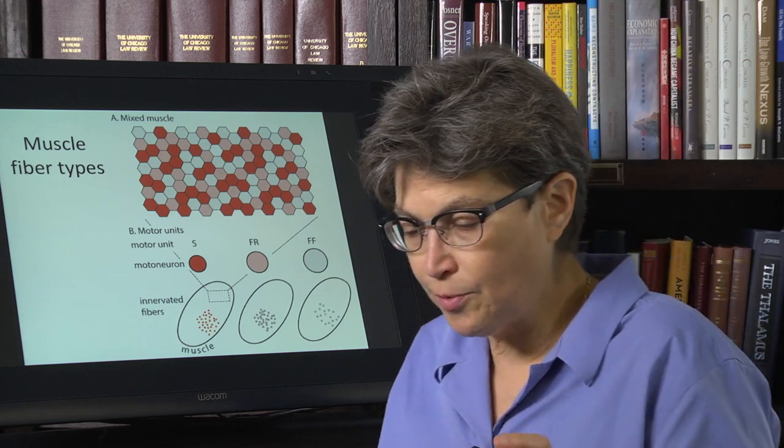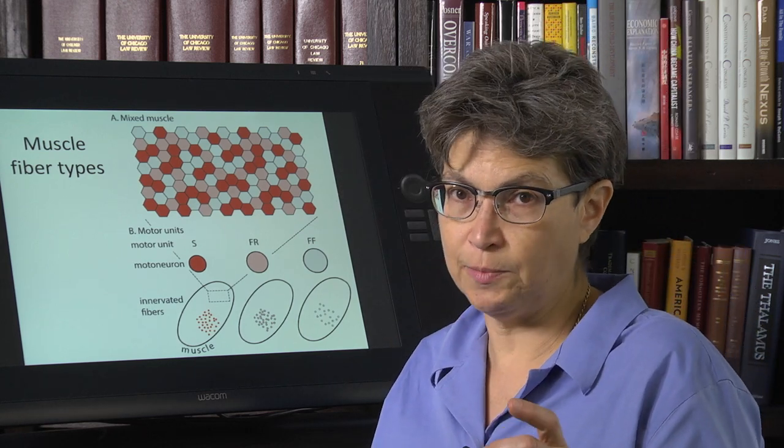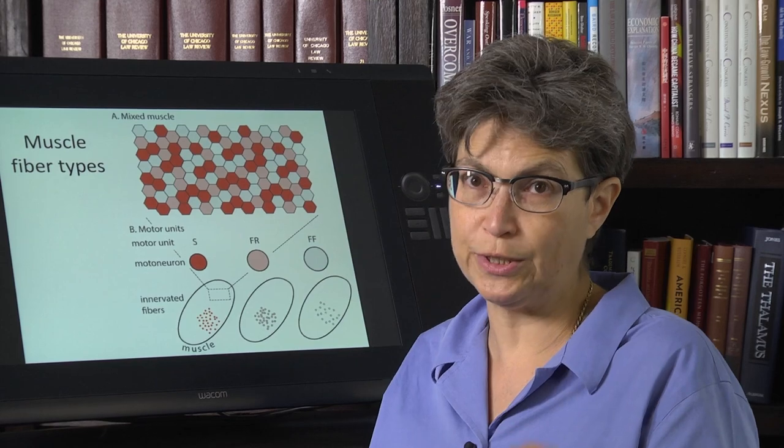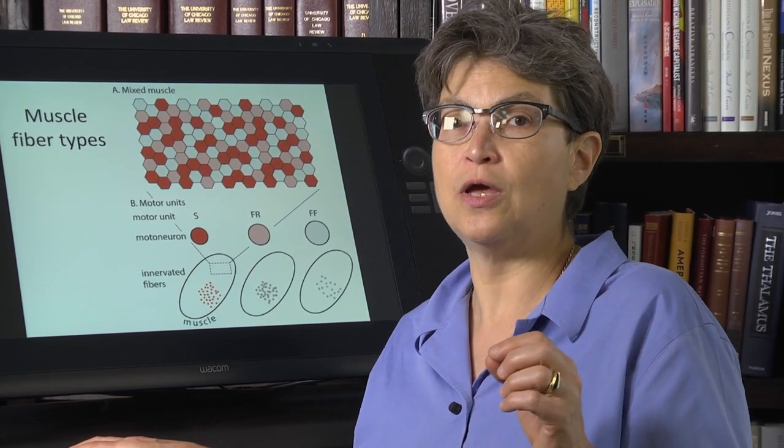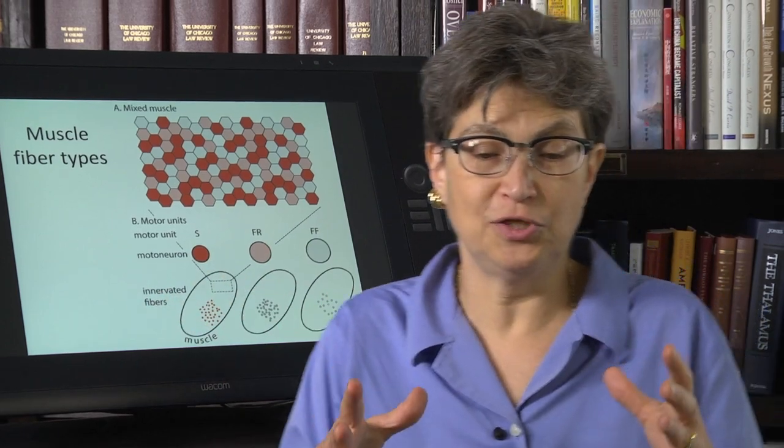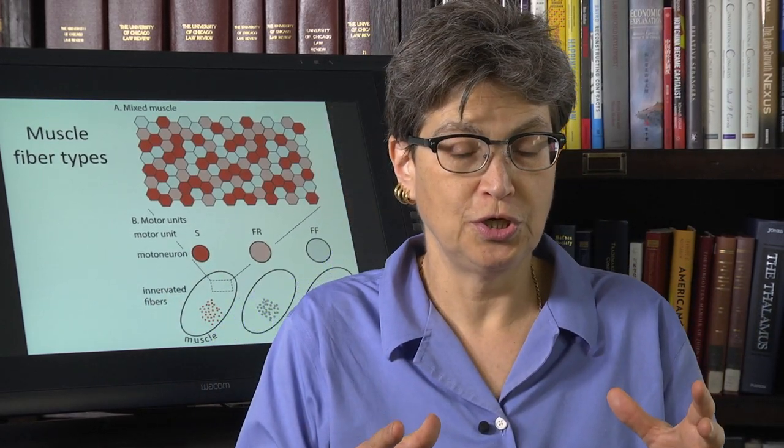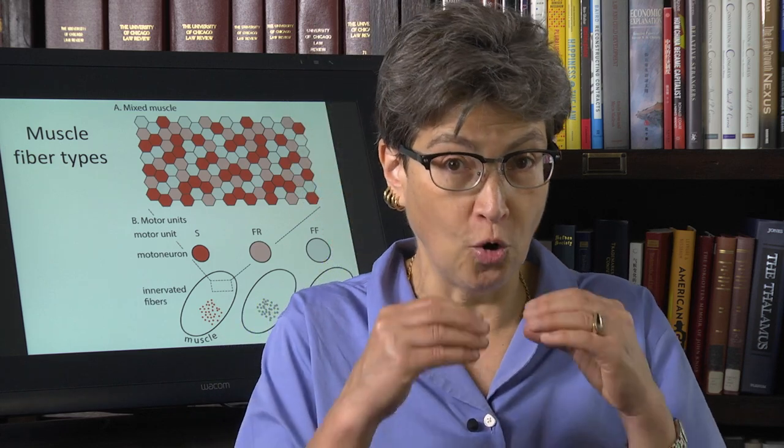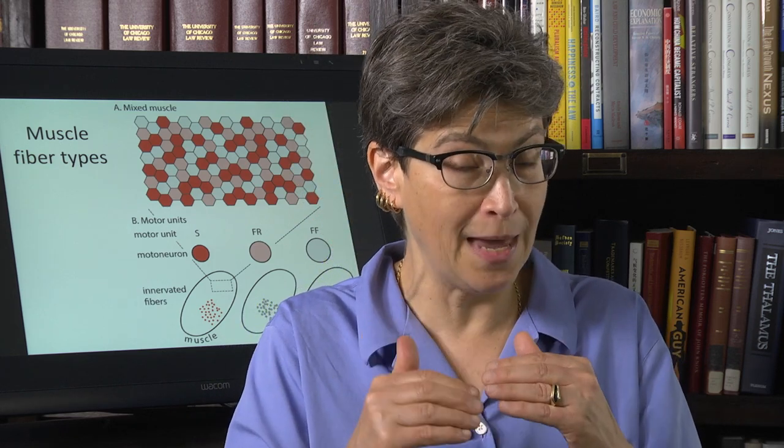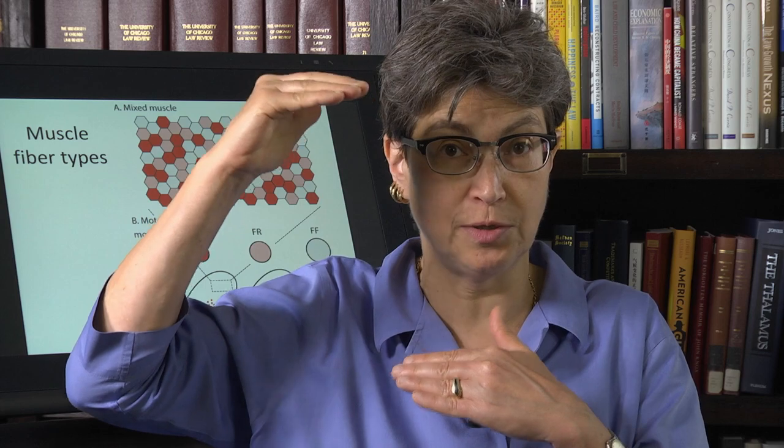Remember that the maximum tension that can be produced by a slow twitch fiber is small. And therefore, there are a lot of slow motor units, but each one of them only contributes a very small amount to the maximal tension that a muscle can produce.